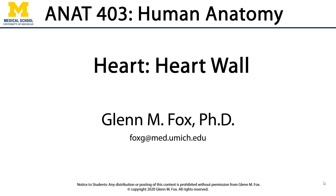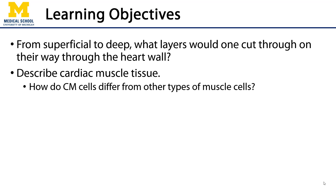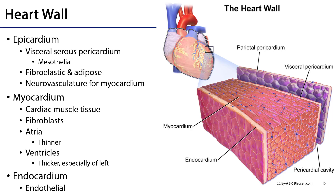Let's talk about the heart wall. In this video, we'll discuss the layers superficial to deep that one would encounter when cutting through the heart wall. We'll also talk about cardiac muscle tissue and how cardiac muscle cells differ from other types of muscle cells. The heart wall has three major constituents: the epicardium, the myocardium, and the endocardium.